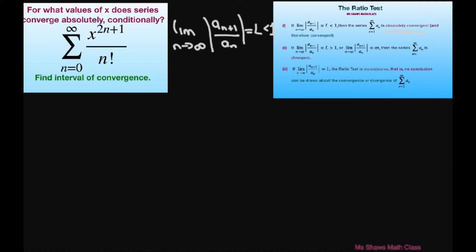So let's look and see what we have and fill everything in. We're going to use the limit as n approaches infinity with absolute value of x to the power of, so we're doing n plus 1, so this will be 2n plus 3 divided by n plus 1 factorial.